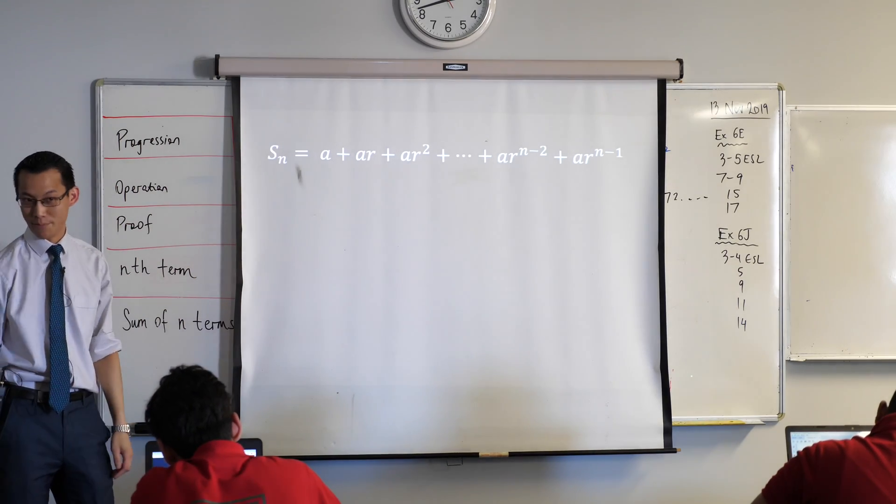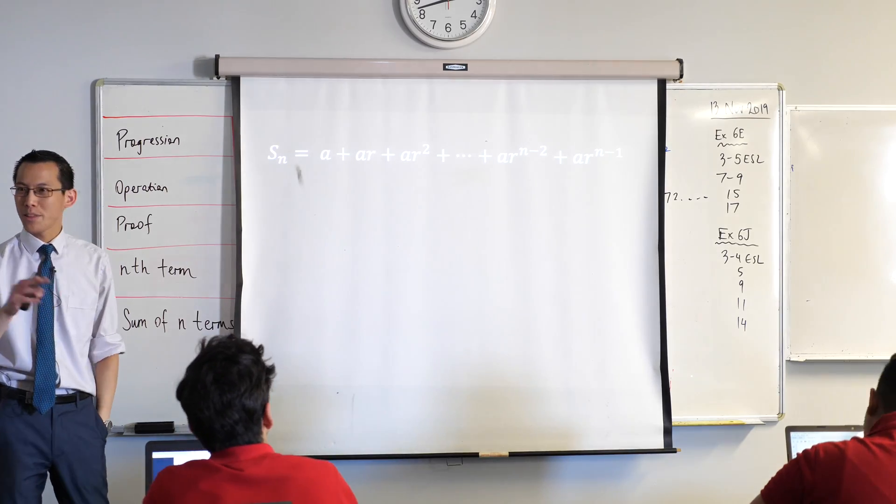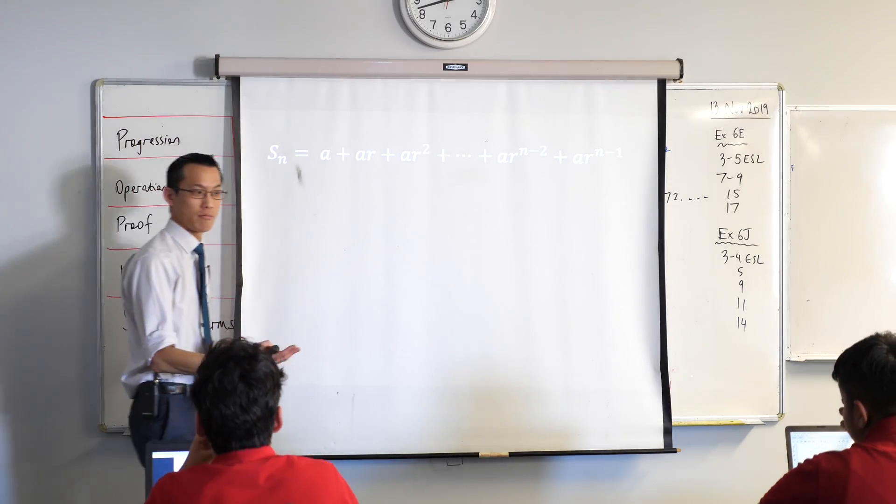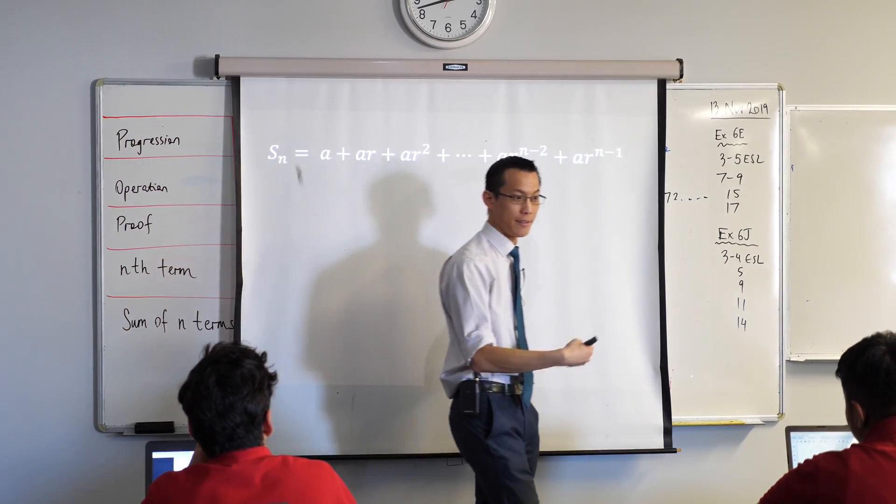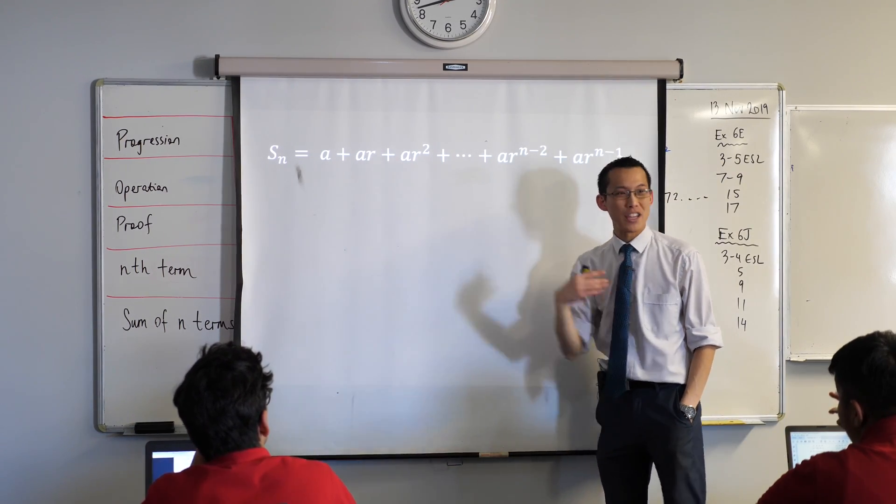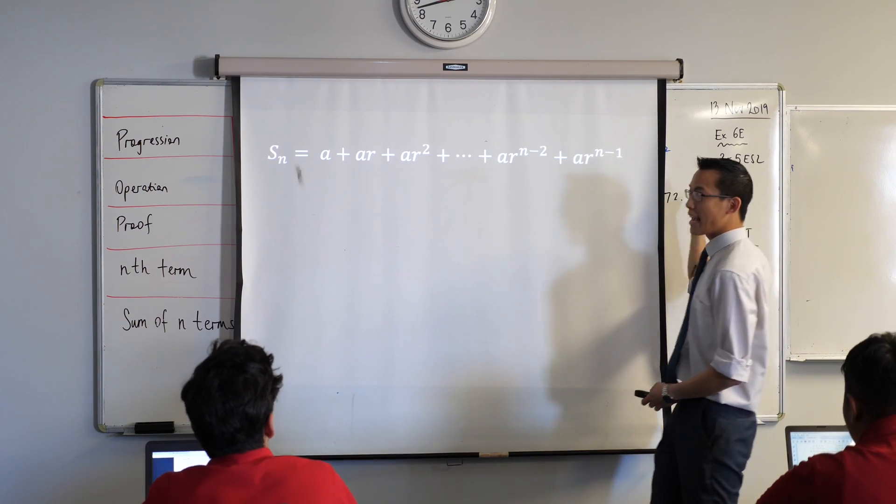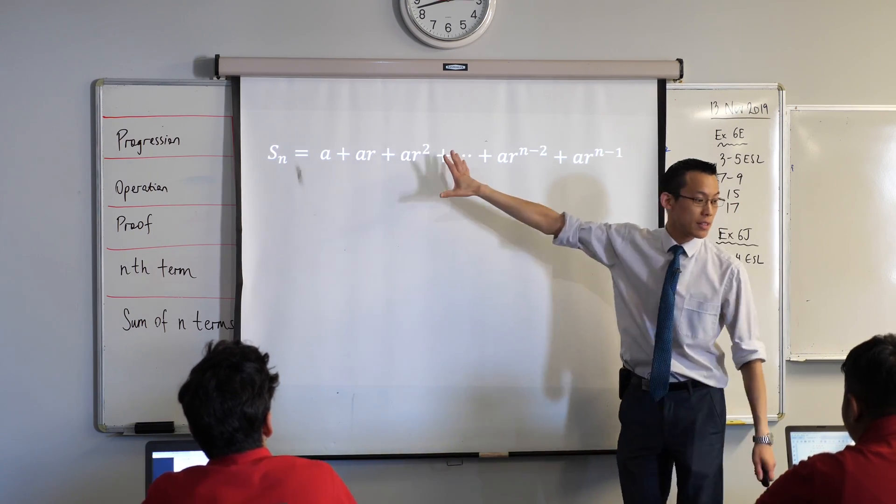Here's what I'm going to do. The trick with the arithmetic progression had to do with addition because it was a series we made from adding. This is a series we've made from multiplication so my trick is going to be to do with multiplication. I'm going to take every single term on this line and multiply through by that common ratio by R.